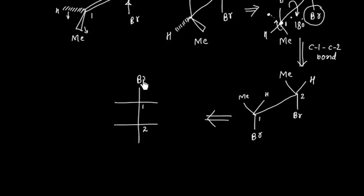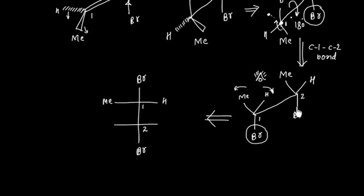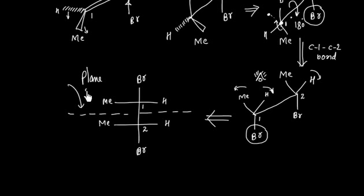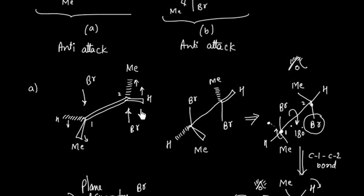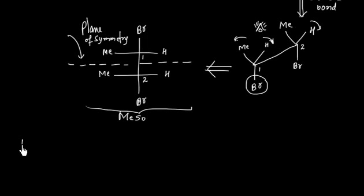Now I can convert this into Fischer's projection formula. Carbon-1 has bromine on the bottom — anything away from the observer goes on the vertical line in Fischer's projection. Bromine is at the bottom on carbon-1, methyl is on the left side, and hydrogen is on the right side. On carbon-2, methyl is on the left side and hydrogen is on the right side. Now if you see, this compound has a plane of symmetry, so this is a meso compound and is not optically active. So with bromine attacking carbon-1 from the top and carbon-2 from the bottom, we get a meso compound.